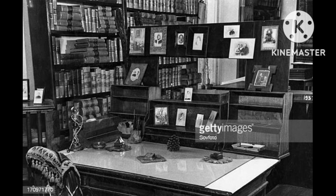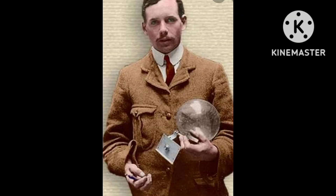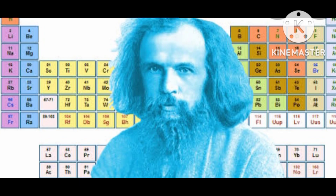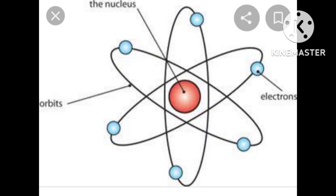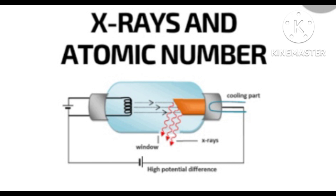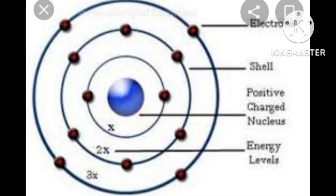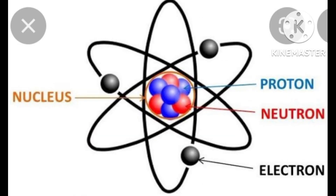The next scientist, Henry Moseley, arranged elements in the periodic table according to the increasing order of their atomic number. He did this because he observed that some elements were out of place in Mendeleev's periodic table. He determined atomic number using X-rays, finding a relation between wavelength and atomic number — a discovery known as Moseley's law. Using X-rays, he discovered a method of determining the number of protons in the nucleus of an atom.